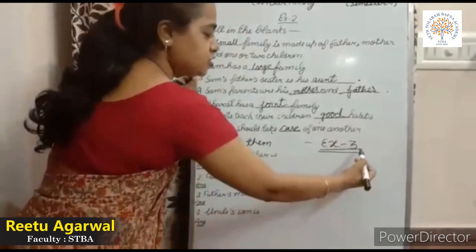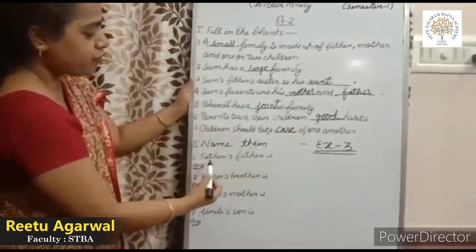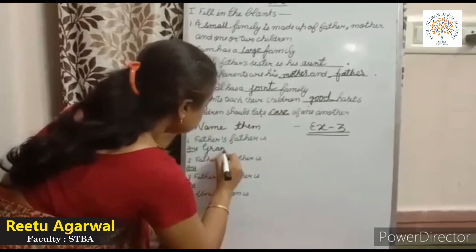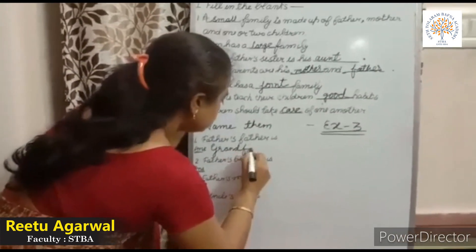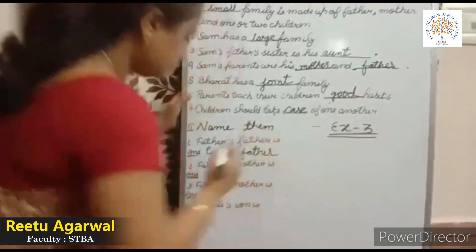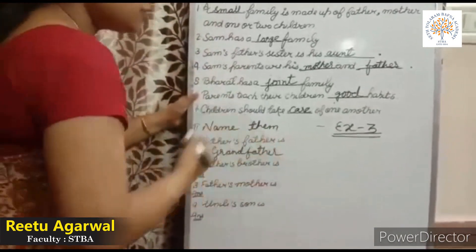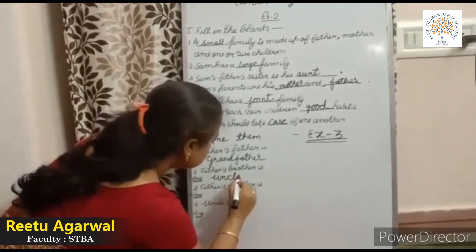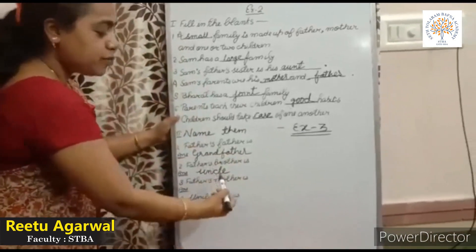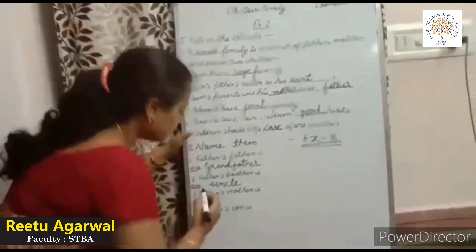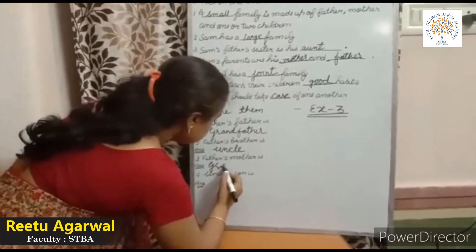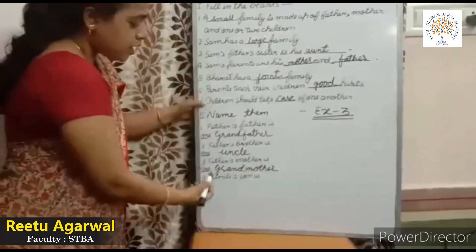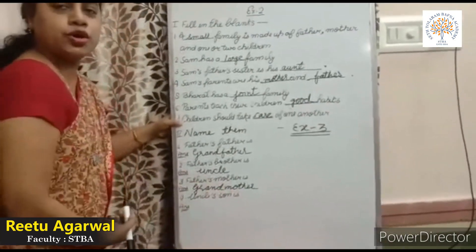Now come to Exercise 3: Name them. Father's father is your grandfather. Father's brother is your uncle. Father's mother is your grandmother. And the last one: uncle's son is your cousin.